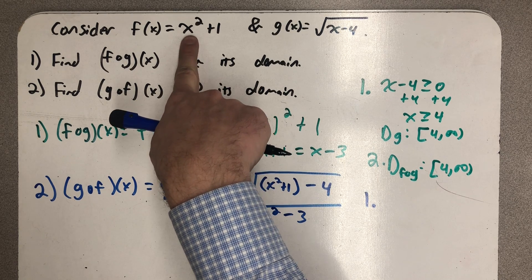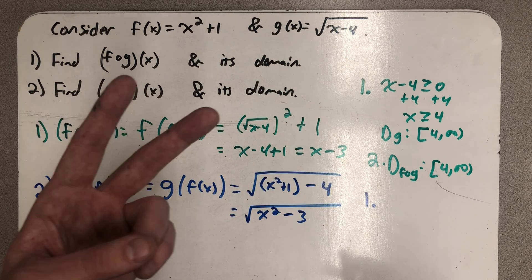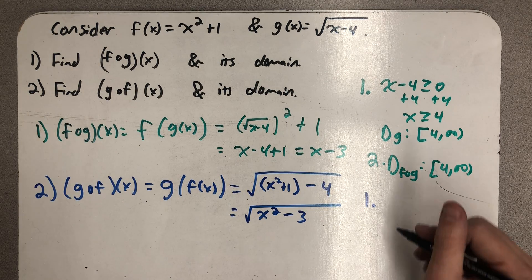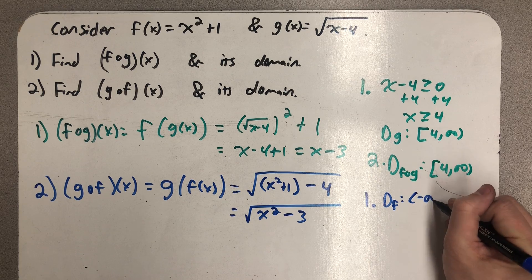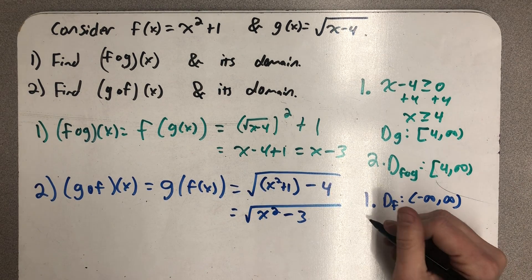In step one, I look at this function and I say, well, the f of x is x squared plus 1. There's no bottom of a fraction. There's no even root. There's nothing to be concerned with. The domain of that inside function is everything. All real numbers. The interval from minus infinity to infinity.